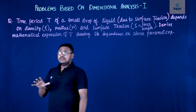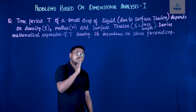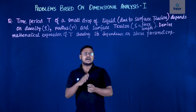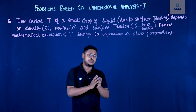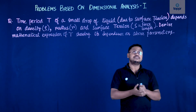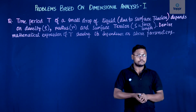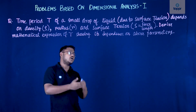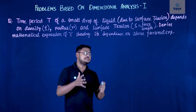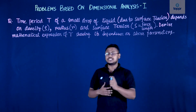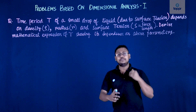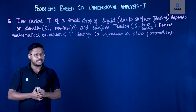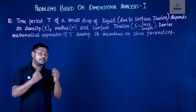The problem says: the time period T of a small drop of liquid due to surface tension depends on density rho, radius r, and surface tension, where surface tension can be written as force per unit length. You have to derive the mathematical expression of time period showing its dependence on the above parameters. Surface tension as force per unit length — this amount of information is sufficient.